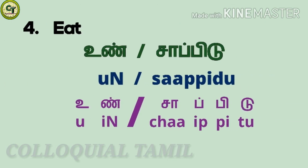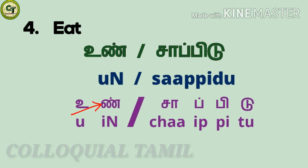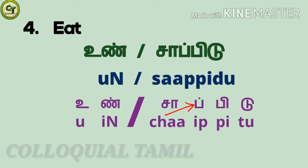For the verb 'eat', you can use un or saapidu. For un: u, a short zone vowel; n, a consonant — this is begin. Together: un. For saapidu: cha, a long zone letter — while speaking, cha may also sound as sa in some words.